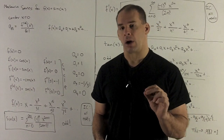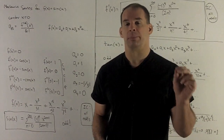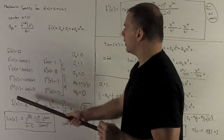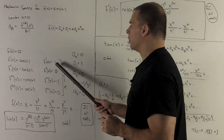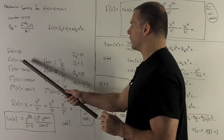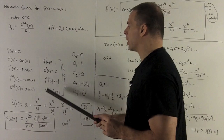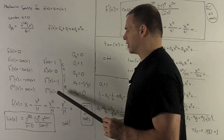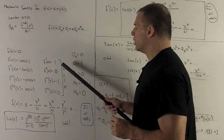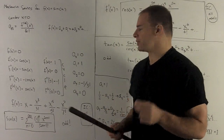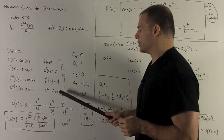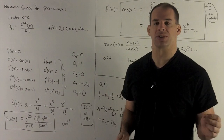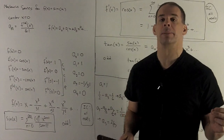Our coefficients are going to cycle. We put in 0 and see what comes out: cosine gives 1, sine gives 0, minus cosine gives minus 1, and sine gives 0. So the pattern is 1, 0, minus 1, 0, and it just keeps repeating: 1, 0, minus 1, 0, and so on.